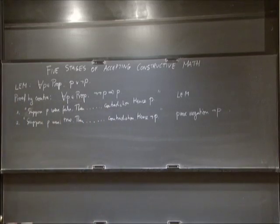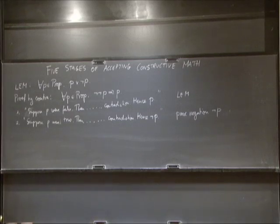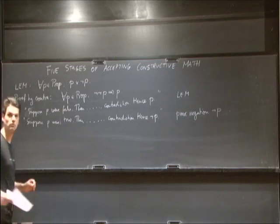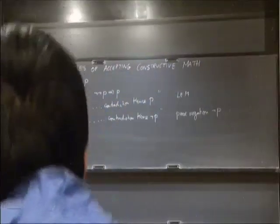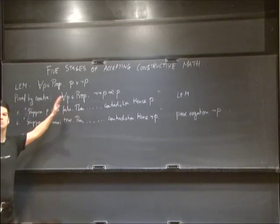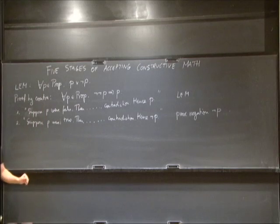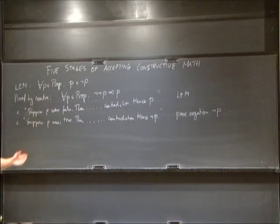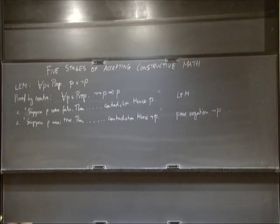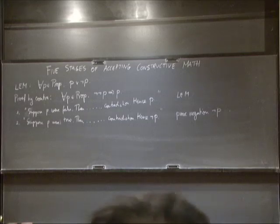I'm saying this because I have met mathematicians who think that in constructive mathematics the word 'contradiction' is prohibited — that as soon as you say contradiction, you're classical. That's not the case. You have to pay attention to what you're doing. If you're trying to prove a proposition by assuming it is false, that's excluded middle. But if you're trying to prove a negation, you assume P and get a contradiction — that's perfectly OK.